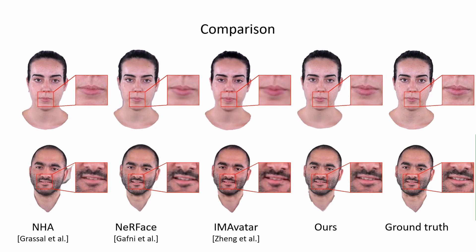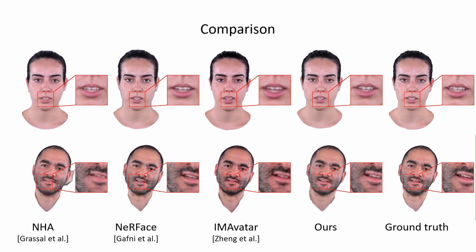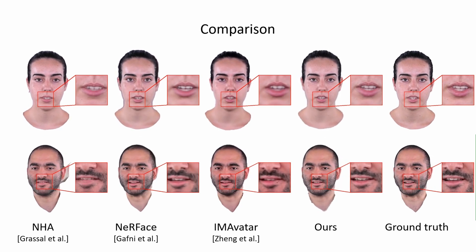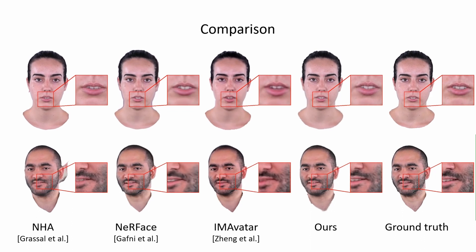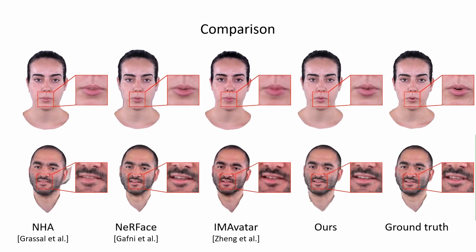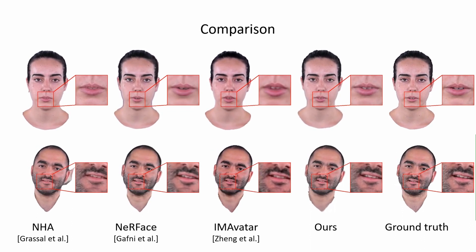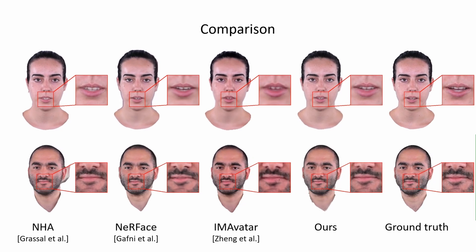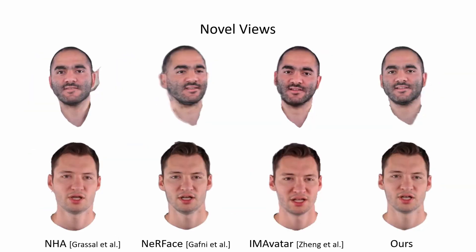Moreover, some of the previous solutions are not temporally stable, which introduces jittering in the avatar. For instance, IMAvatar uses DECA by Feng et al. for input data generation, which is not temporally stable and can lead to camera shaking in the final renderings.